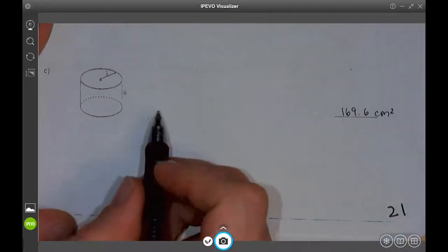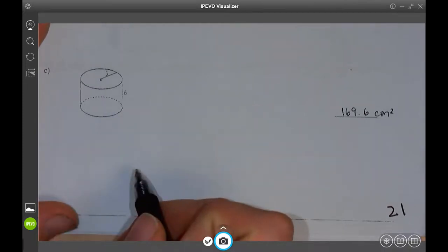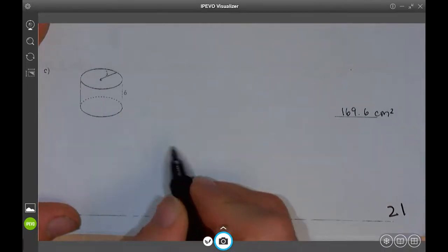For solving the surface area of a cylinder, you're always doing the exact same thing. You're going to break it up into two different parts.